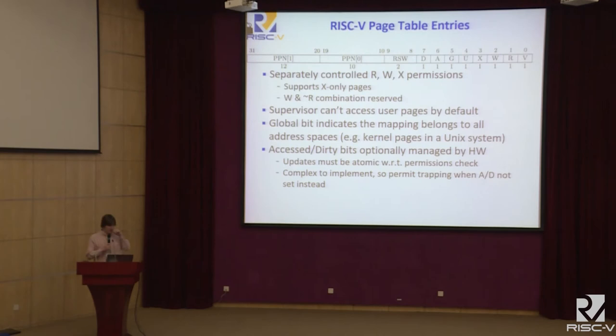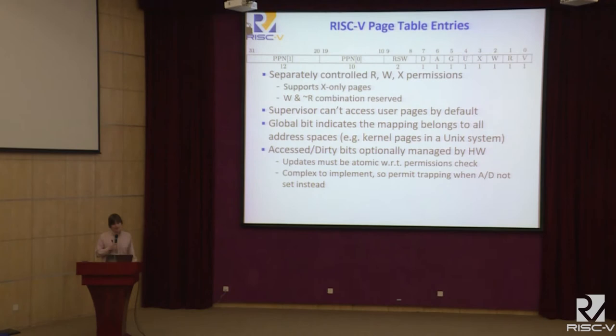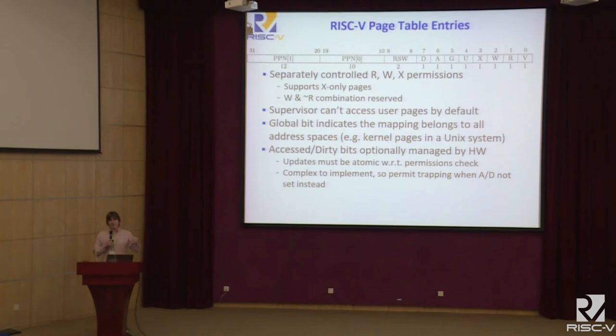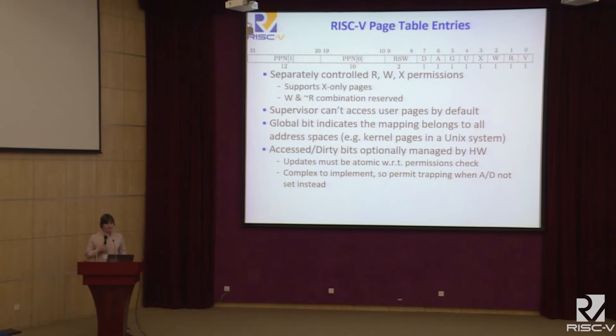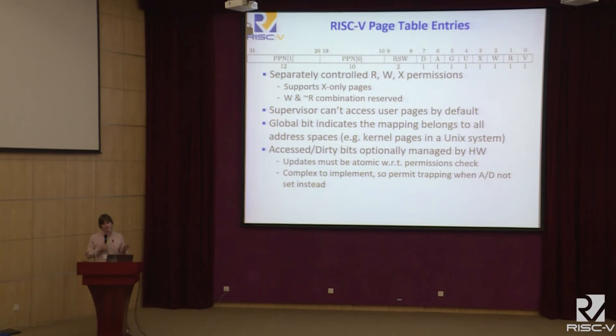Previously we said hardware performs updates to access and dirty bits, but that turned out to be a significant anti-feature unless those updates are atomic with respect to the permission checks on the page table entry. If hardware reads the entry, sees access permissions are granted, and then non-atomically sets the access or dirty bit, another access could have intervened and wreaked havoc on page reclaim. What we ended up doing is requiring those checks to be atomic, but because that's painful to implement, we also provide the option of not doing hardware updates at all — instead generating an exception when the appropriate access or dirty bit is not set and letting the OS decide what to do.